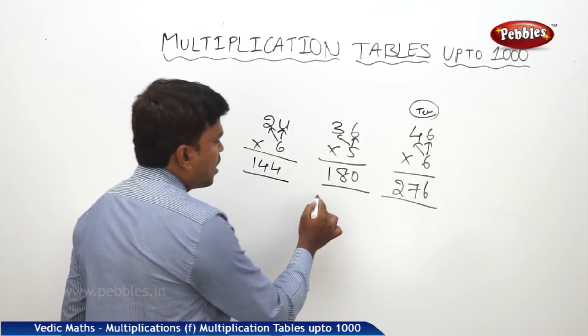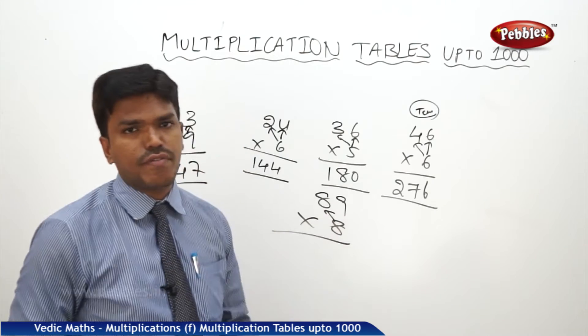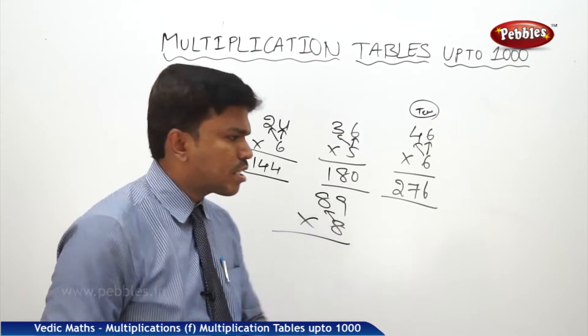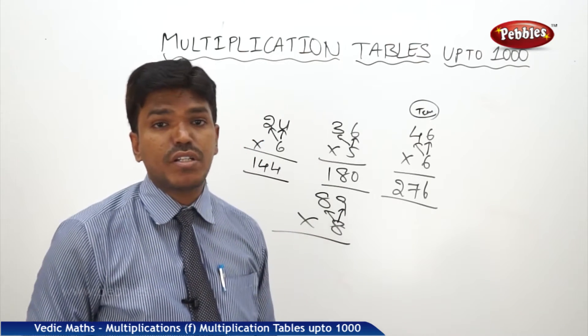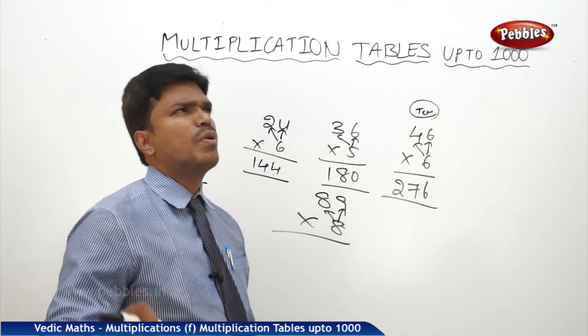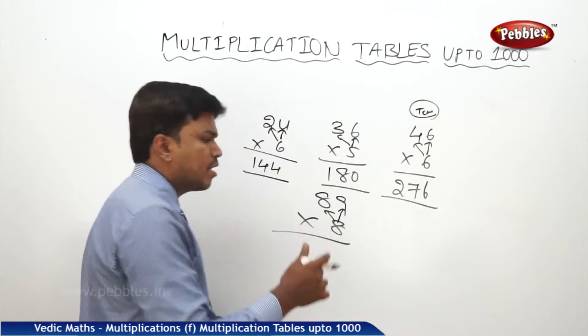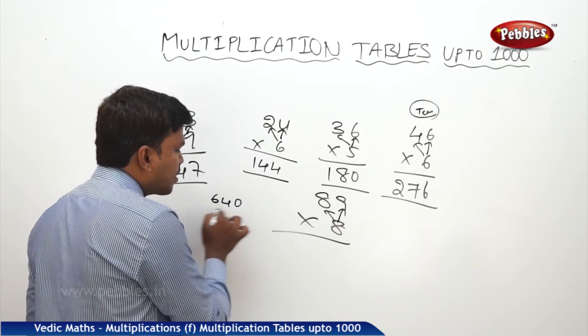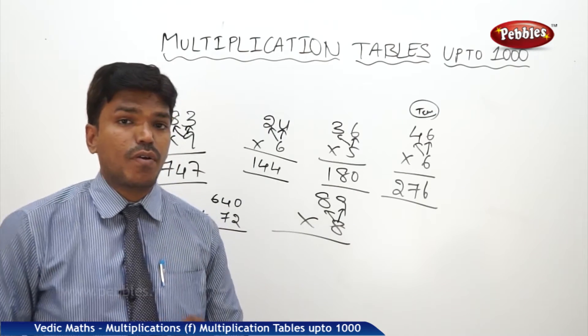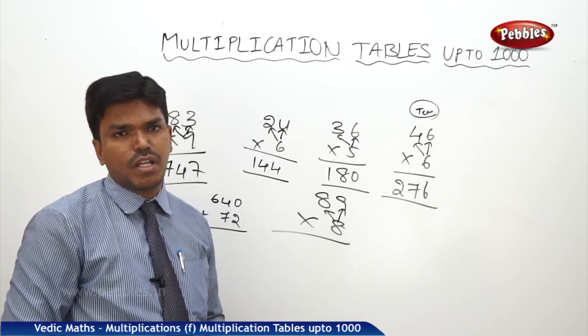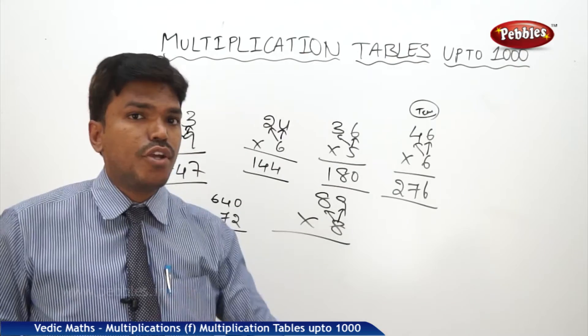One more example. I want to multiply 89 by 8. What is 8 eights? 64, but take it as 640. 640 plus 72. 640 plus 72, how much? 712. Most of you people may be feeling difficult in adding the numbers like this in the mind. 640 plus 72, you're feeling a little difficult in this one because it is crossing some hundred. If it is below 100, it is not a problem, but whenever the addition sum is crossing some hundred, you are feeling difficult.